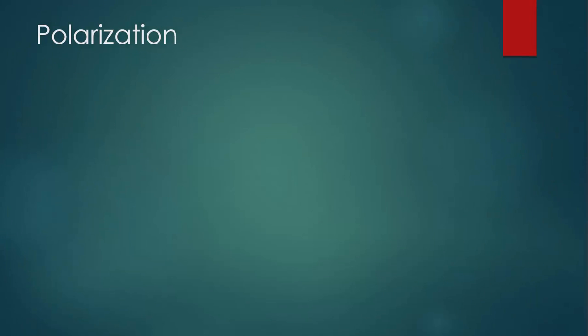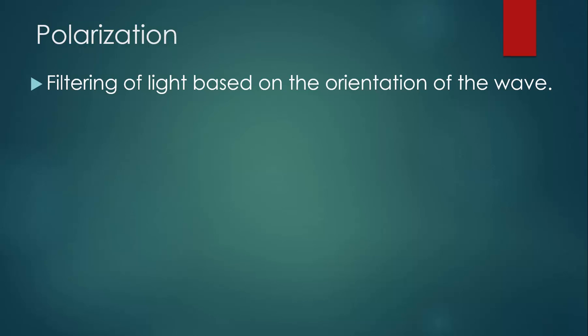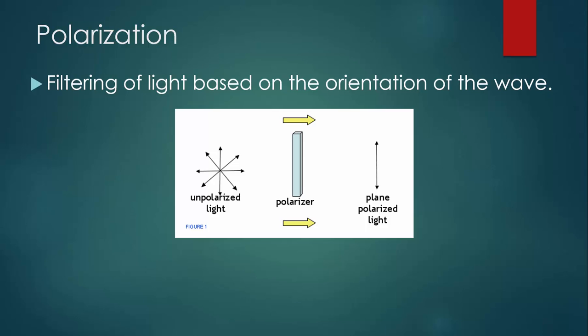The first thing we'll talk about is polarization. Polarization is the filtering of light based on the orientation of the wave. Being a transverse wave, light can be oriented vertically, horizontally, diagonally, literally an infinite number of orientations.